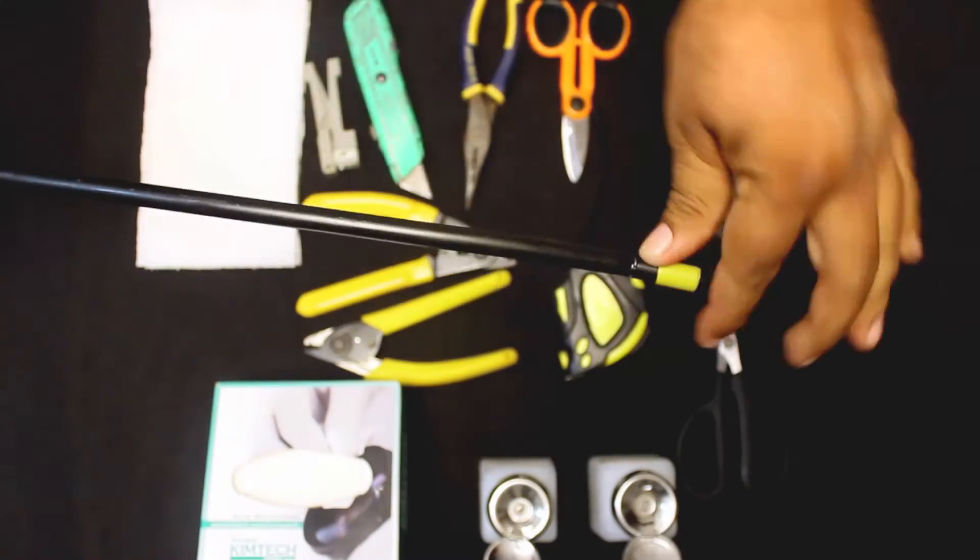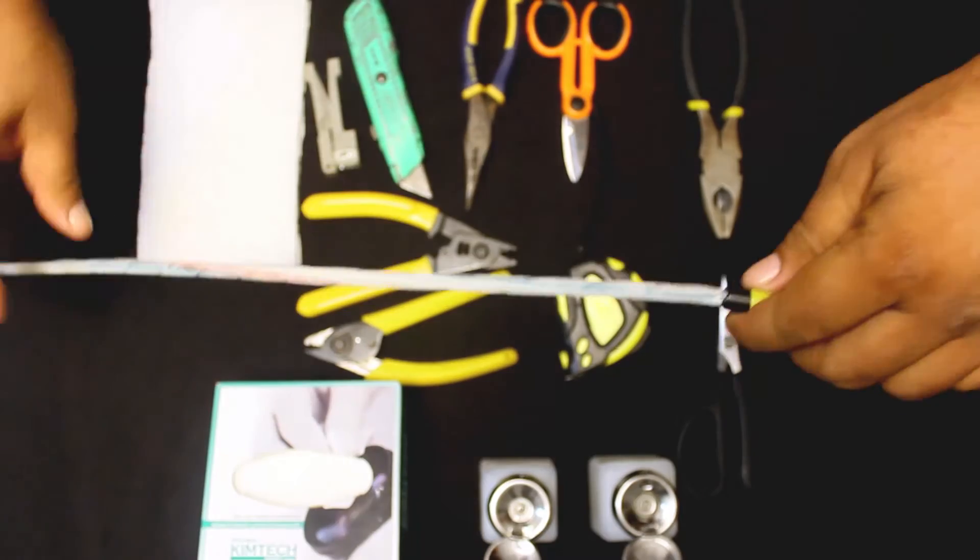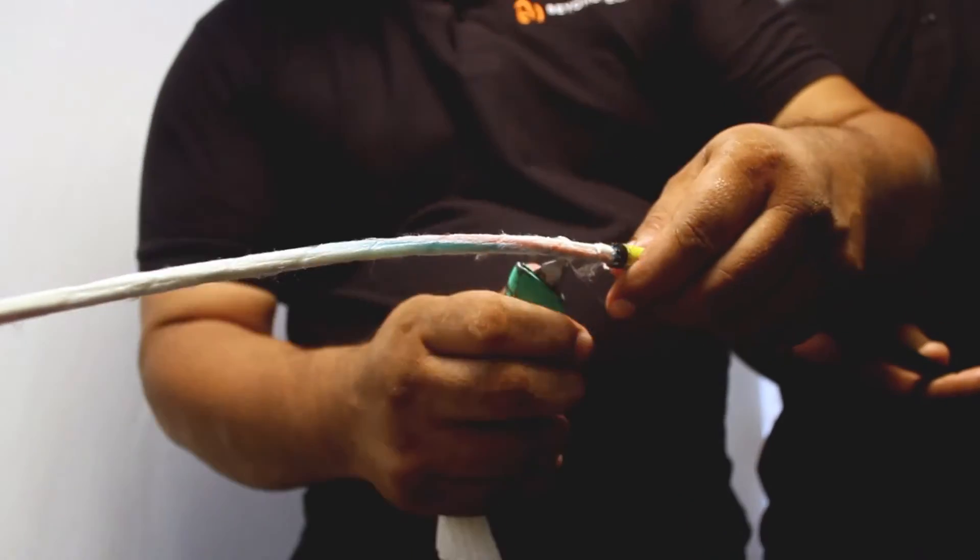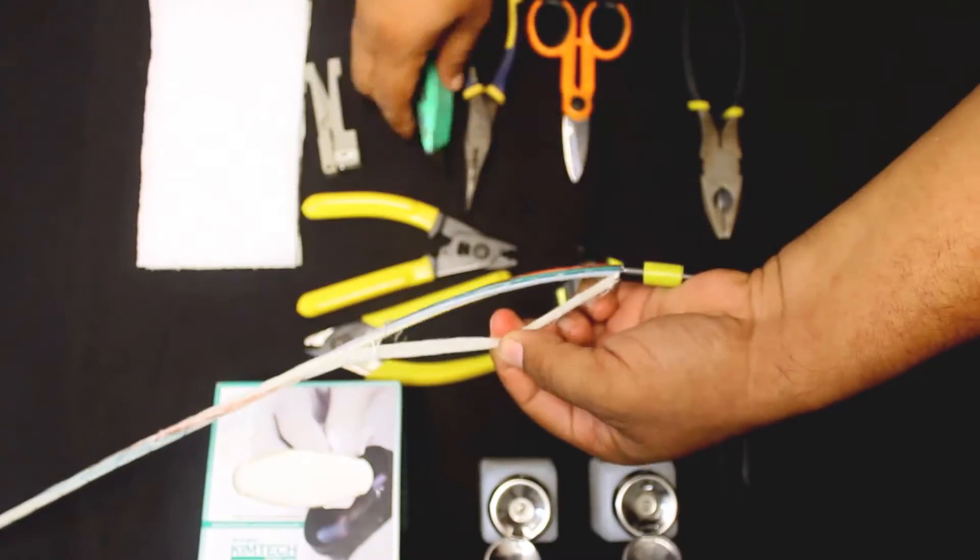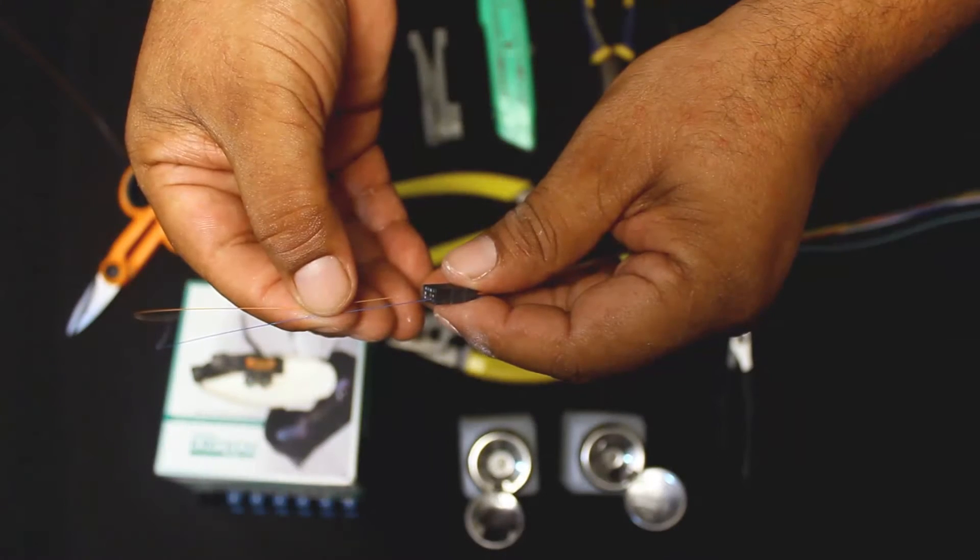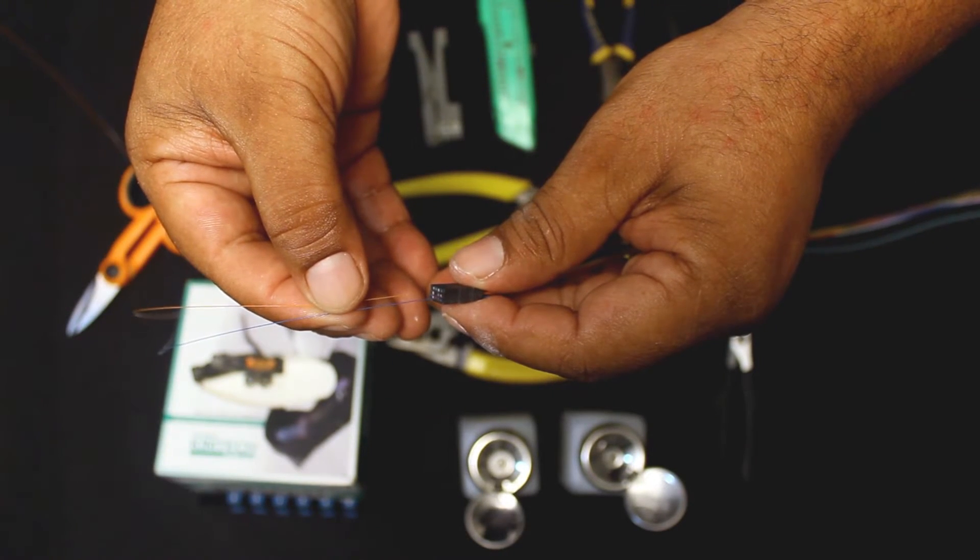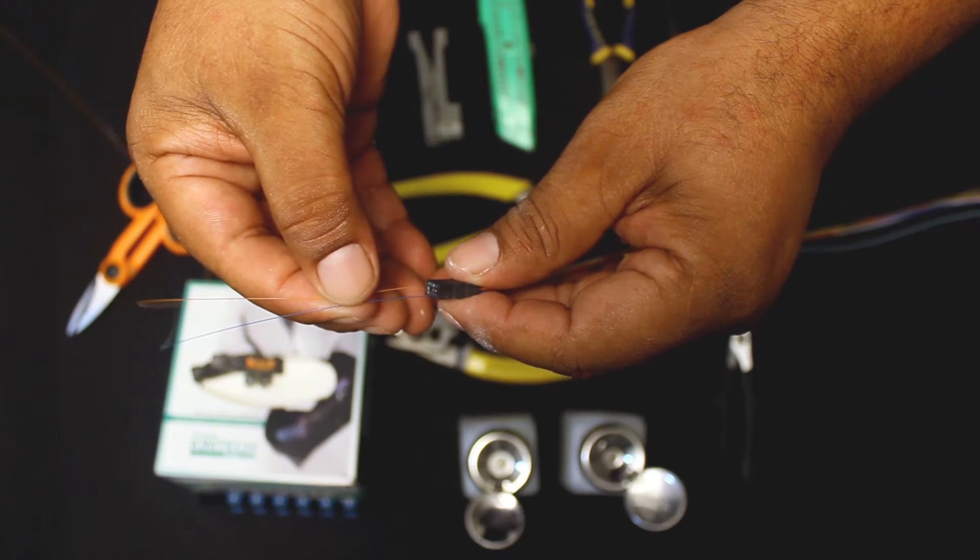The first thing you have to do is prepare the loose tube fiber. Once you finish and you're sure all fibers are completely clean, you can start the procedure. One by one, insert the fibers 1.5 centimeters or 0.5 inches into the appropriate color tube.